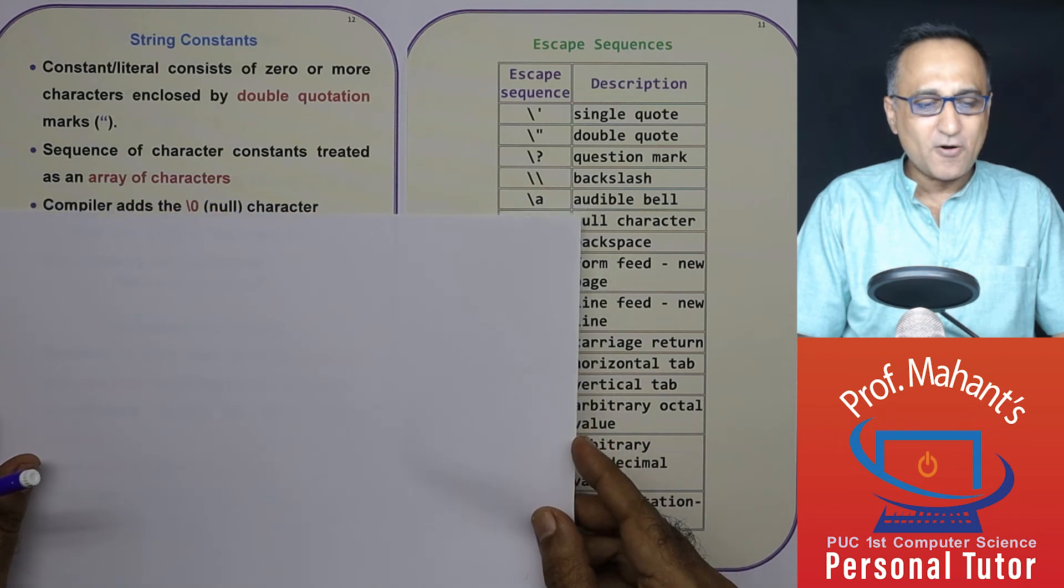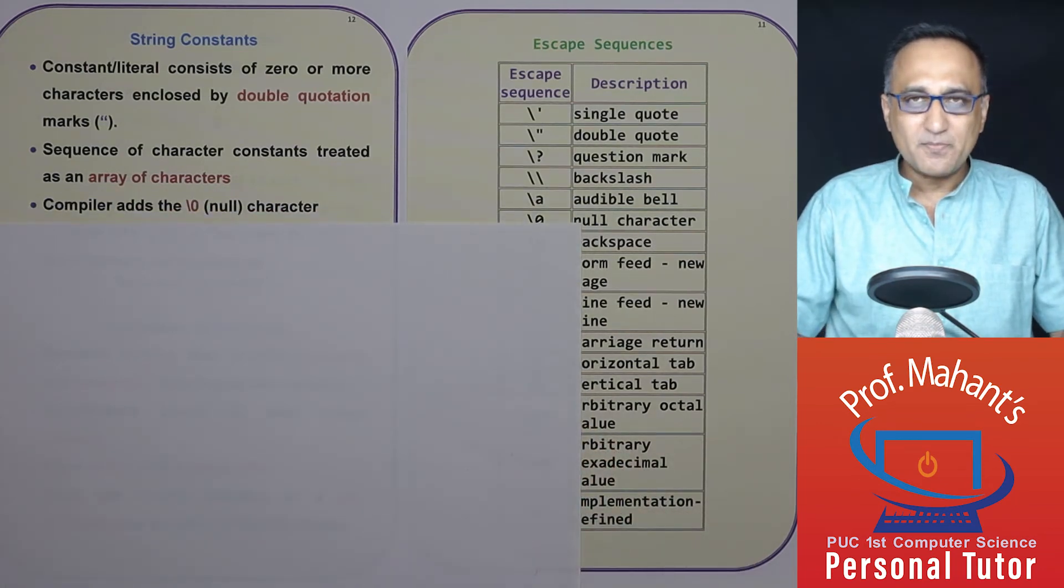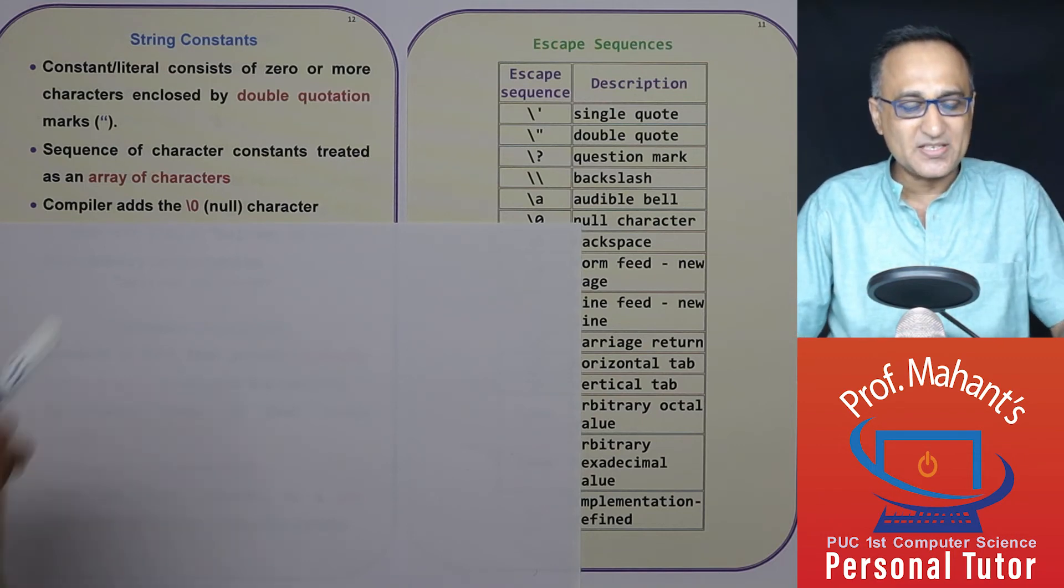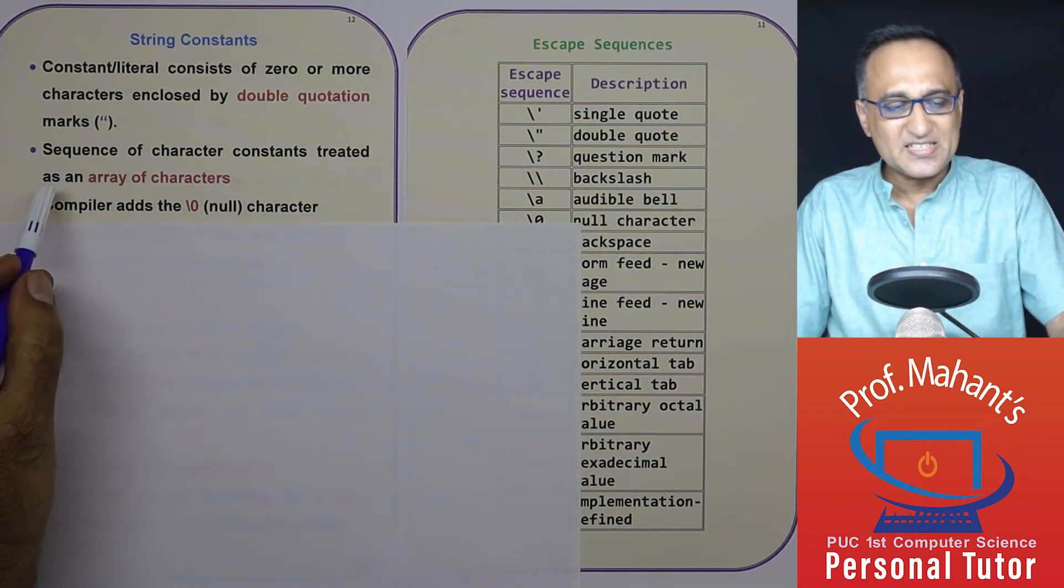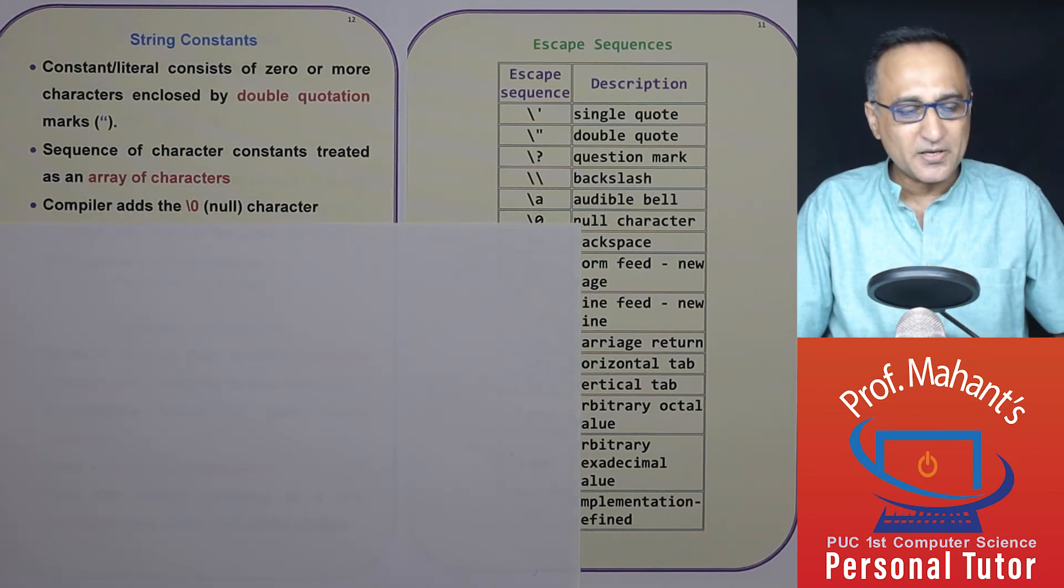So it is a sequence of characters - zero or more. It's a set of characters, you can say, or character constants. These are treated as an array of characters. You will know what is an array once we come to that particular chapter.